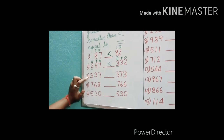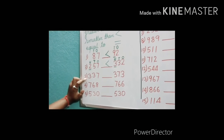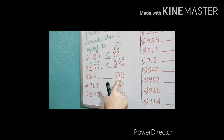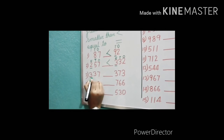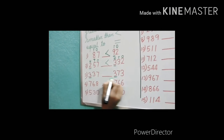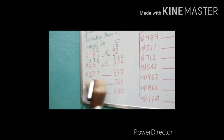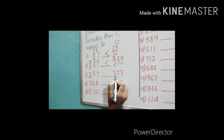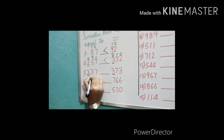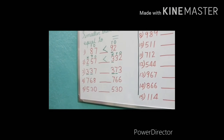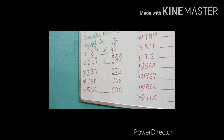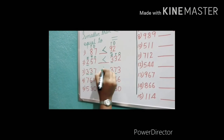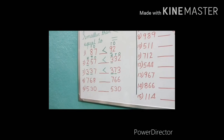In question number 3, can you tell me which is the greater number? First we will see the first digit. Here we can see both the digits are the same — here also 3, here also 3. So what will we do? We will go to the second place. Here 3, and here 7. You can tell me very easily — which is greater, 7 or 3? 7. Very good.